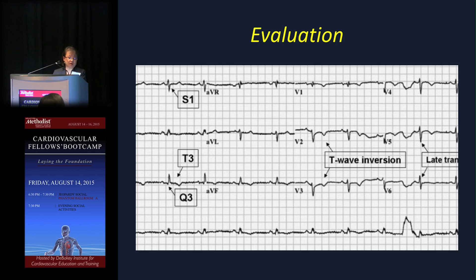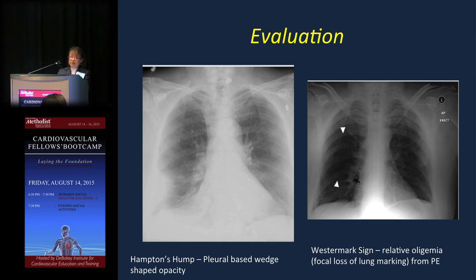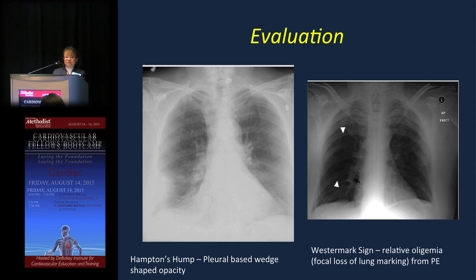When somebody comes in with shortness of breath and chest pain, you get an EKG. There are findings that strongly suggest PE, such as the S1Q3T3 pattern and T-wave inversions — seen because of strain on the right heart. Chest x-ray can also be helpful: you can see the pleural-based wedge-shaped opacity called Hampton's Hump, and the Westermark sign — a very dark area representing oligemia or relative lack of blood flow due to the pulmonary embolism. But none of these are very sensitive or specific.